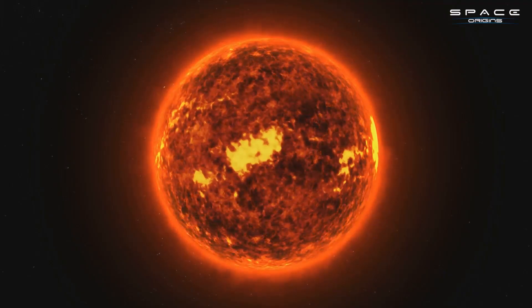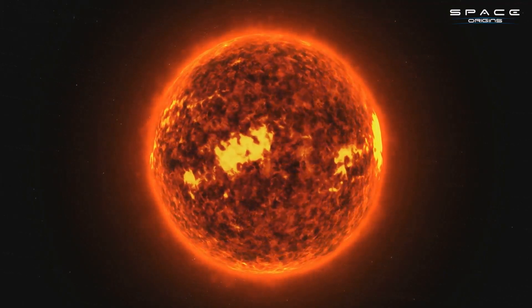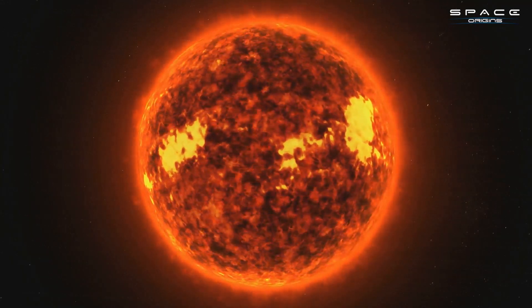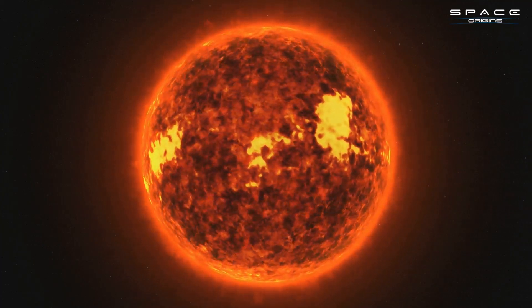This is particularly problematic for ground-based telescopes, which rely on visible light to observe celestial bodies. The sunward region, the area of space where the sun's glare is most intense, thus becomes a significant blind spot.